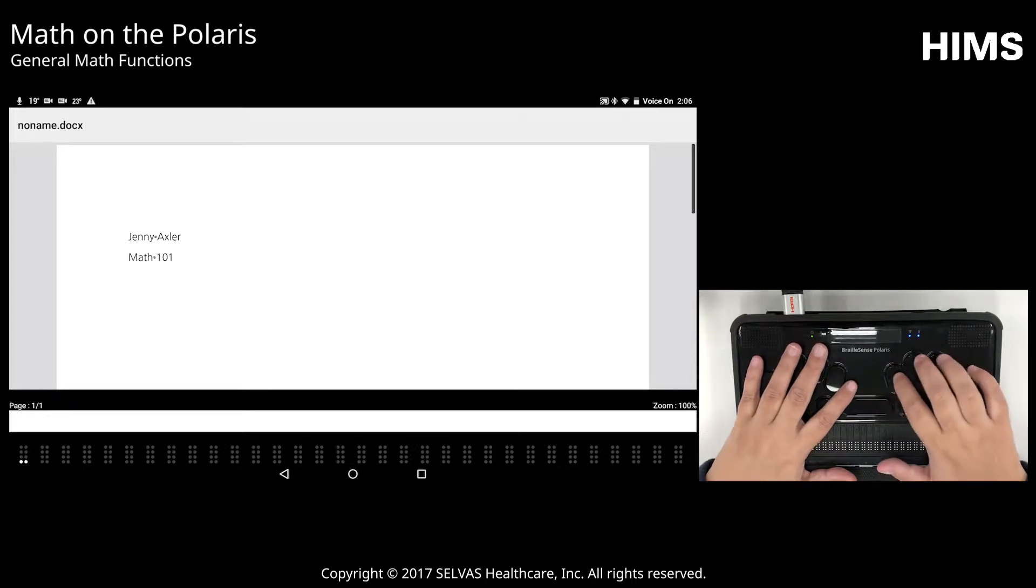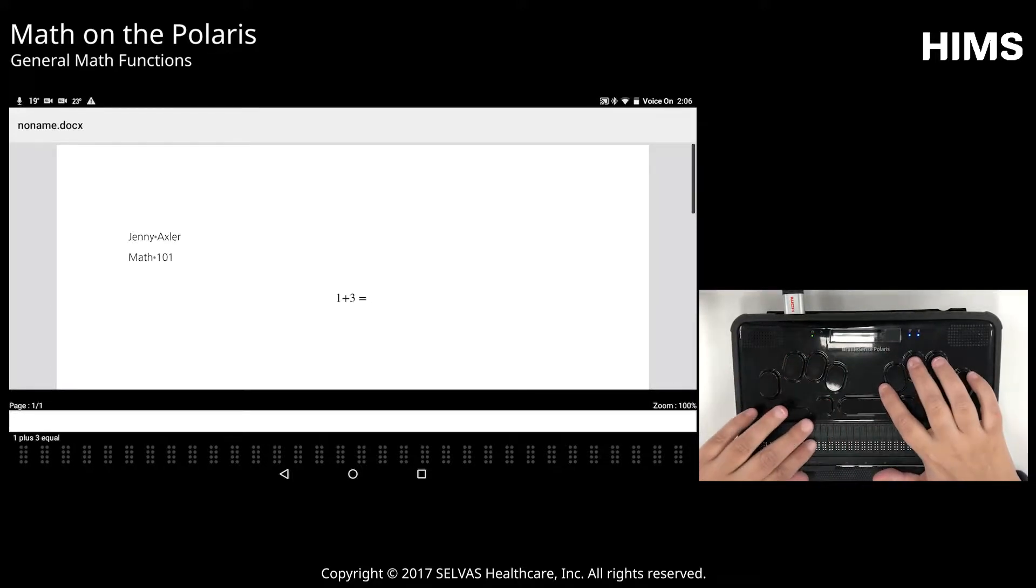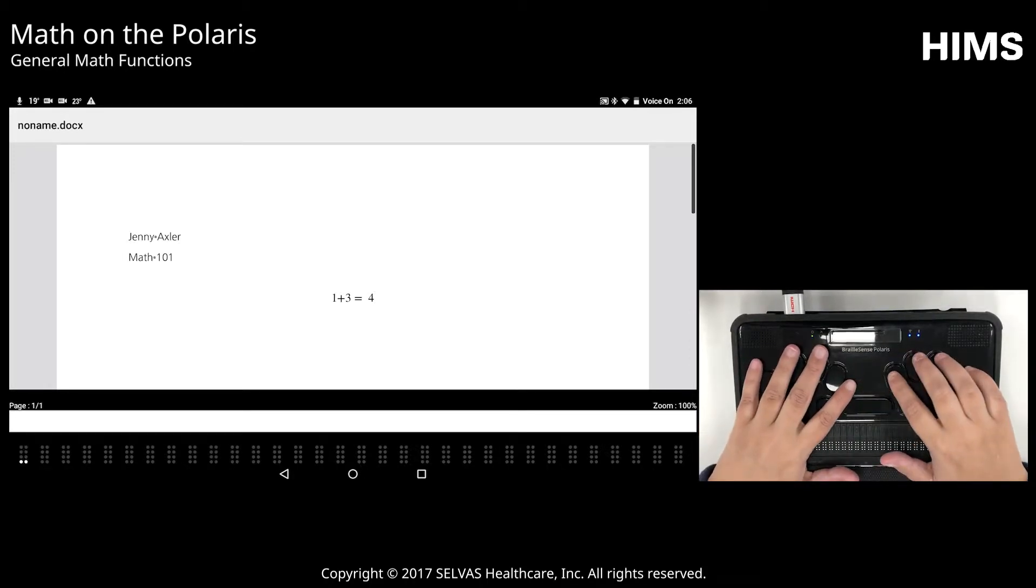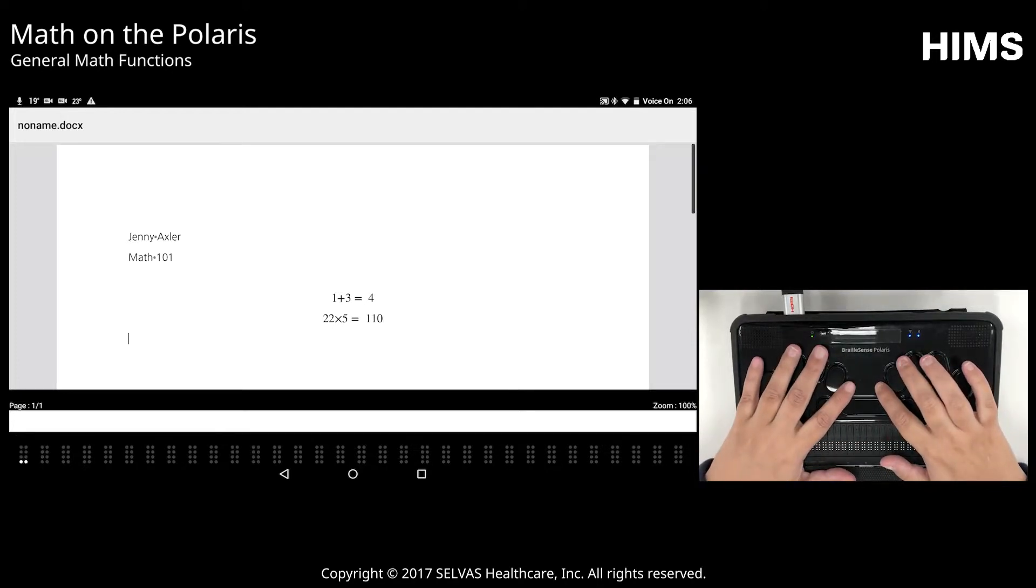So I'm just going to type some very simple math problems. We'll do number 1 plus 3 equals 4 for our younger students. We'll try something a little bit more difficult. Number 2 times 5 equals 110. And again, I just typed 22 times 5 equals 110.